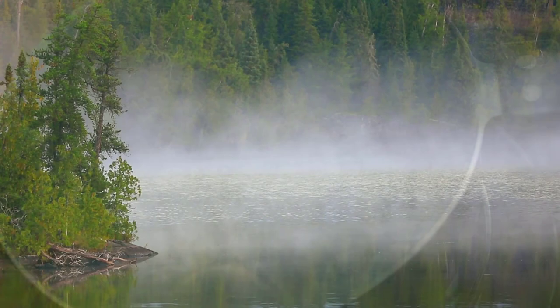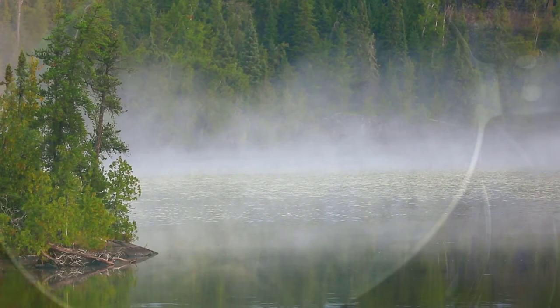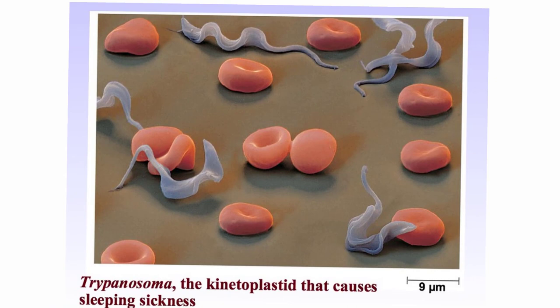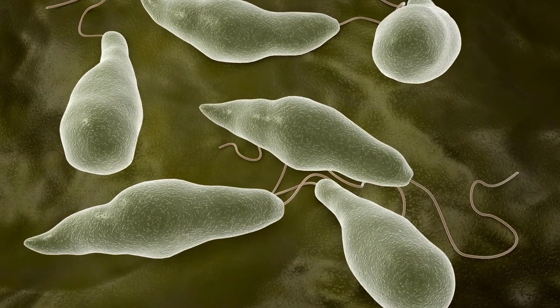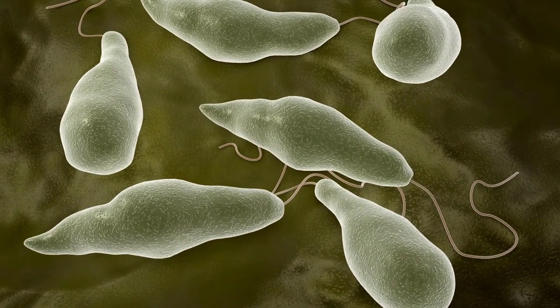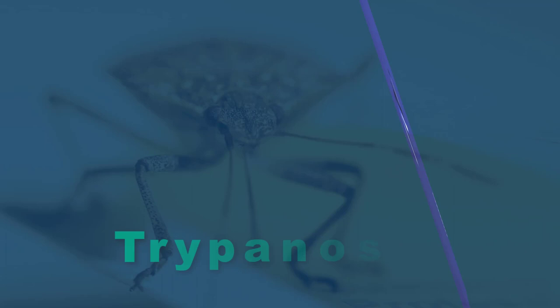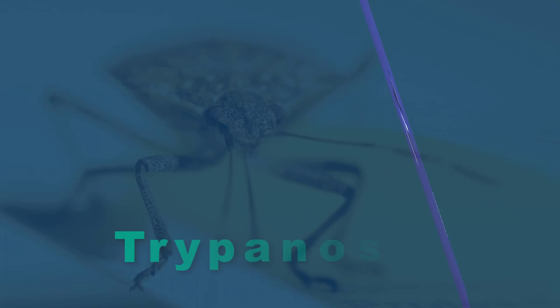Another set of protists in the Excavata supergroup is the Euglenozoa. Among these are the kinetoplastids, which is another ancient lineage of heterotrophic species. A unique characteristic of these species is a single posterior flagellum attached to the cell's wavy undulating membrane. The kinetoplastids have a typical array of eukaryotic organelles and a single mitochondrion that contains a mass of DNA called the kinetoplast. Some 60% of the kinetoplastid species are trypanosomes — the name referring to the hole the organism bores to enter and infect a host. Two trypanosoma species are transmitted by insects and cause forms of human sleeping sickness in Africa and South America, affecting millions of people.